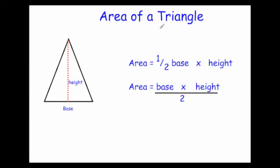In this video we're going to look at how to find the area of a triangle. The area of a triangle is given by the formula half the base times the height, or base times height divided by two — both give the same answer. Make sure you get the correct units; the units will be centimeters squared, millimeters squared, or meters squared — they will be squared units.